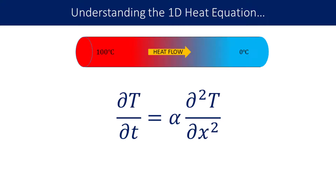Now that we have seen the equation, let's try to understand it a little deeper. Let's imagine a metal rod that is unevenly heated along its length — say one end is hotter, the other end is cooler. There is a variation in temperature distribution along its length. Due to this variation, there will be a heat flow from hotter zones to colder zones, causing the temperature at colder zones to rise and at hotter zones to fall. That's intuitive.